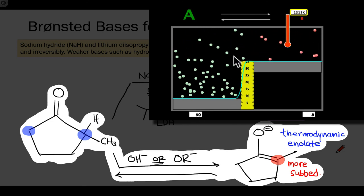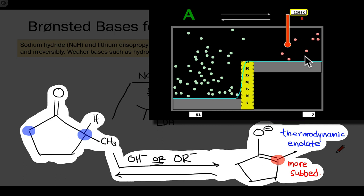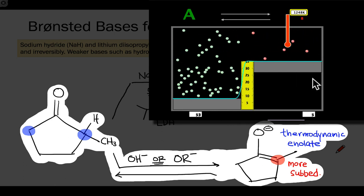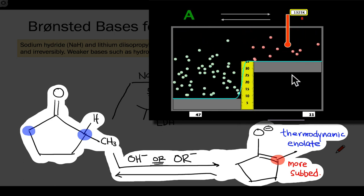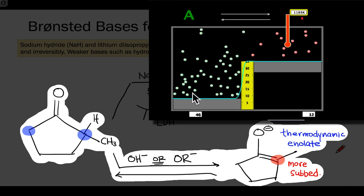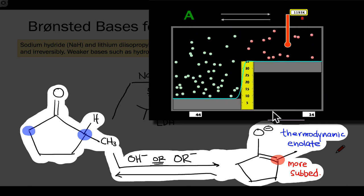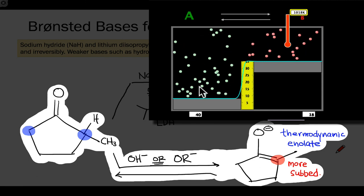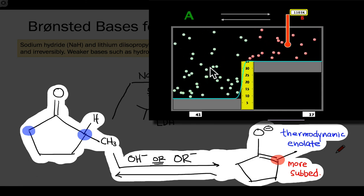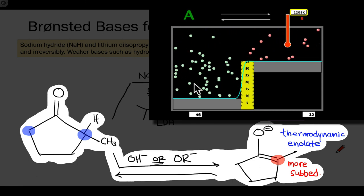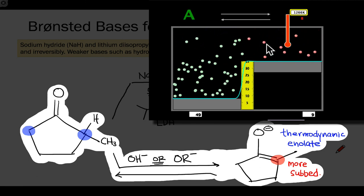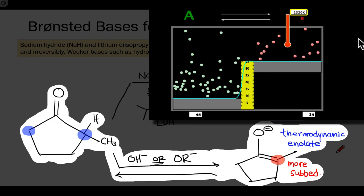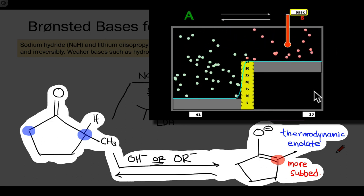So even though the deprotonation is thermodynamically disfavored, provided we generate the enolate in the presence of an electrophile, we can drag all of that ketone over to product. Eventually all of the neutral ketone and hydroxide would get converted to enolate and ultimately substituted product and water.